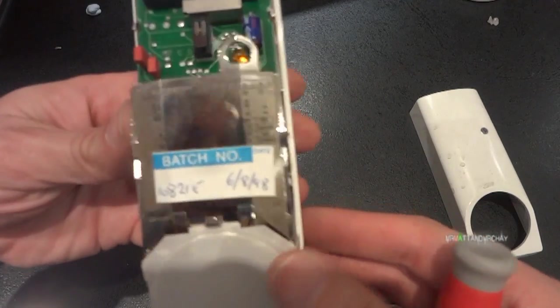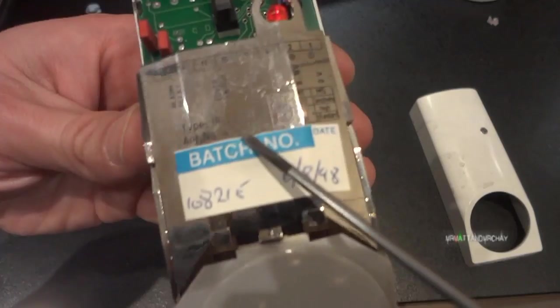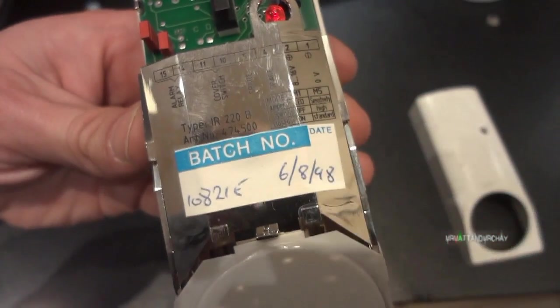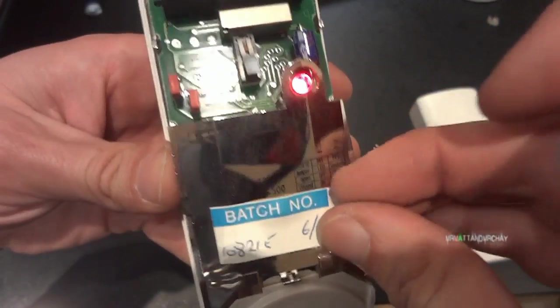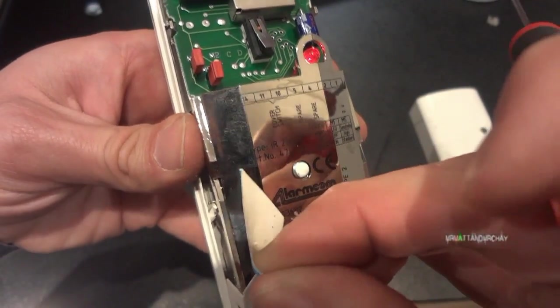I was trying to look for the model number of this and I saw that it was an IR 220. This is 1998, and I thought I've probably got this from Blue Circle, so they probably put the batch sticker over the top. I was right - it's an Alarm Comm detector.